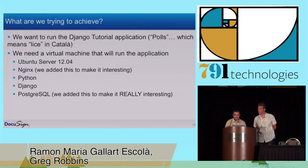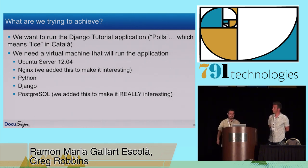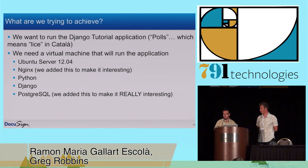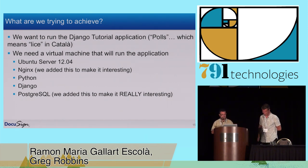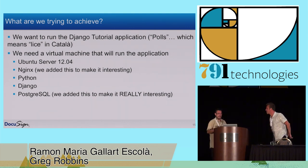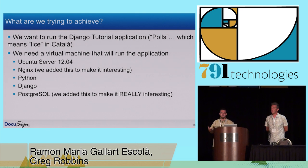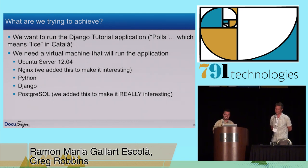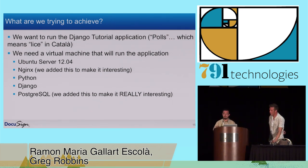So, after all that, what we're trying to achieve is just to spin up a virtual machine that runs the Polls application — which in Catalan means 'lice'. And to do that, we just use an Ubuntu Server 12.04, NGINX, Python, Django, and PostgreSQL. It's just to make things really interesting.